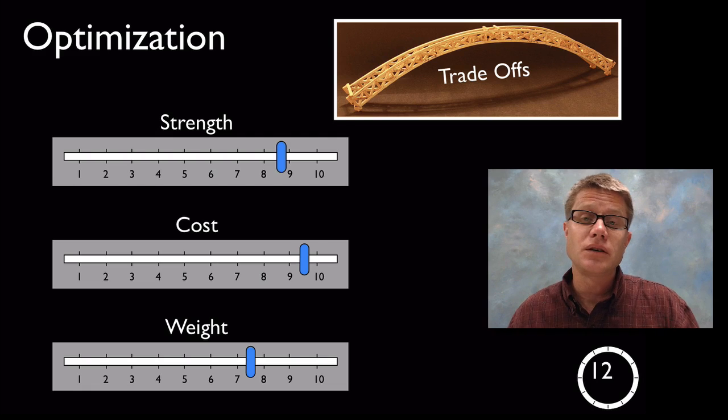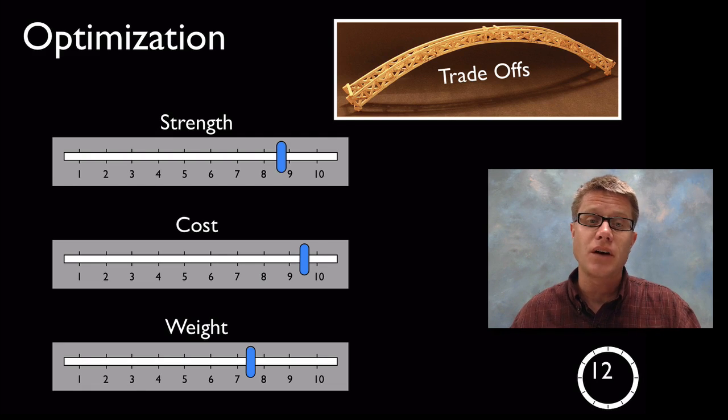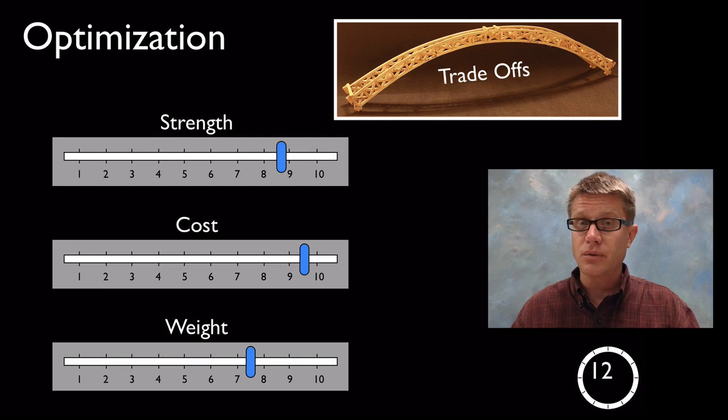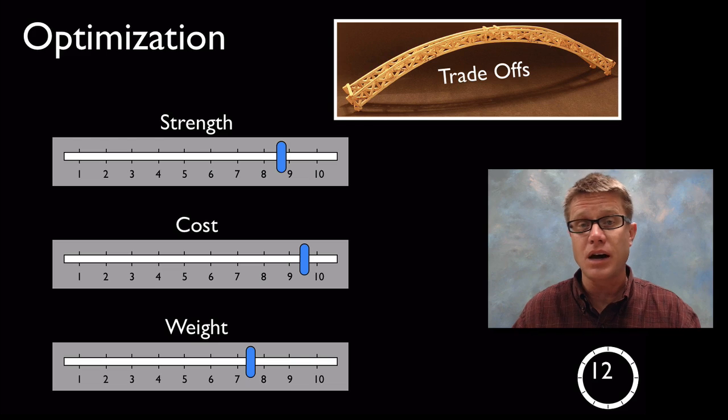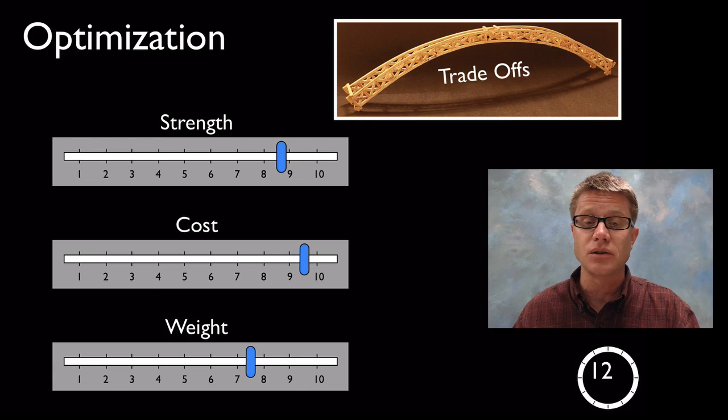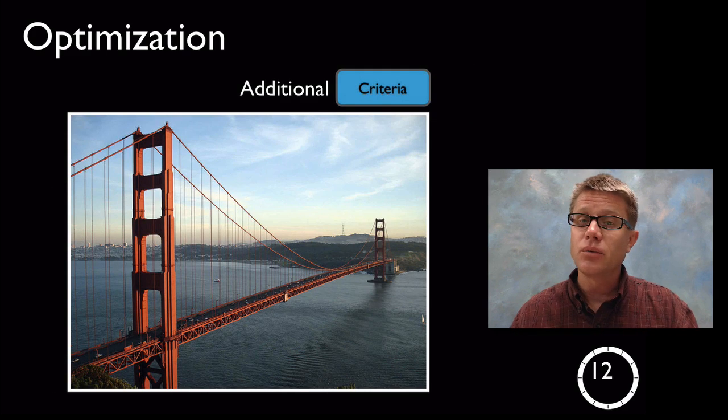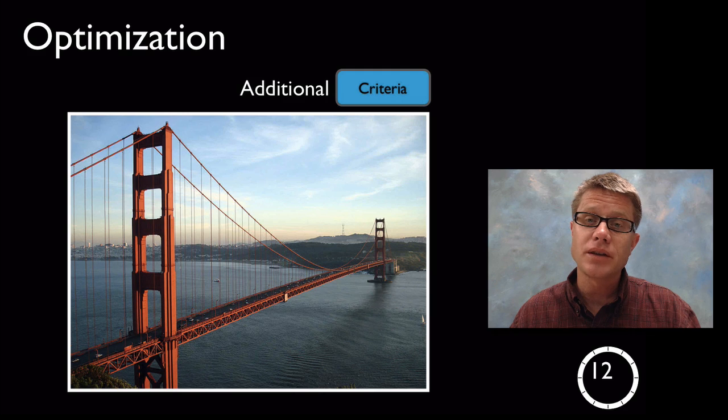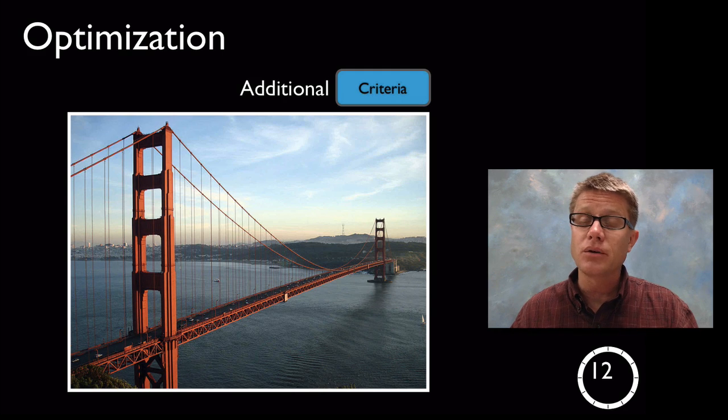As we move into high school, we really want to start talking about this process of optimization. Not just testing one thing but testing three things. You want your students going through all of these different designs to come up with the optimized solution, the best solution at that time. We do this in the real world as well, and as we get bigger projects, we have to add additional criteria to that.